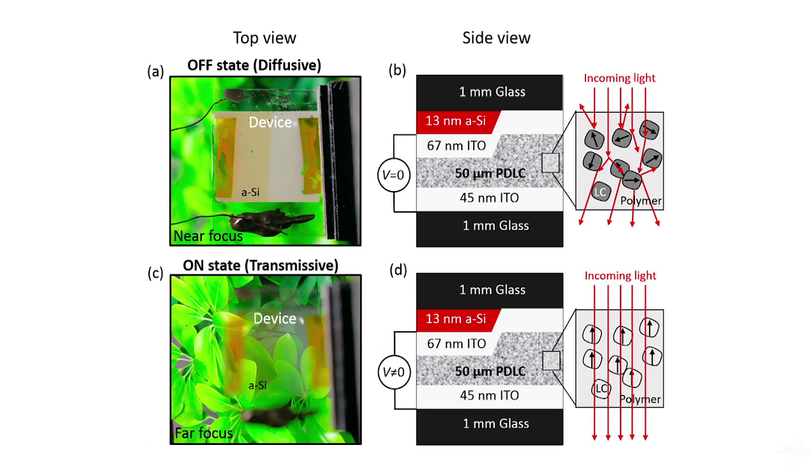When the window is off, the liquid crystals scatter light, making the glass opaque. The silicon layer could absorb the light and convert it into the electricity needed to turn the window on. When a user flips the switch, an electric current aligns the crystal so light can pass through, making the window transparent.